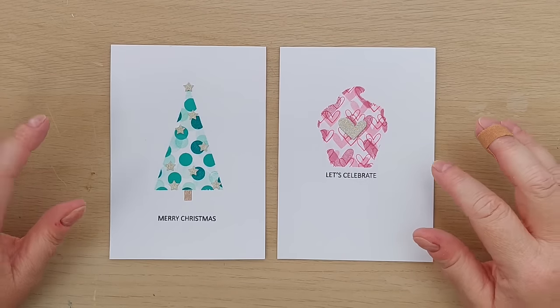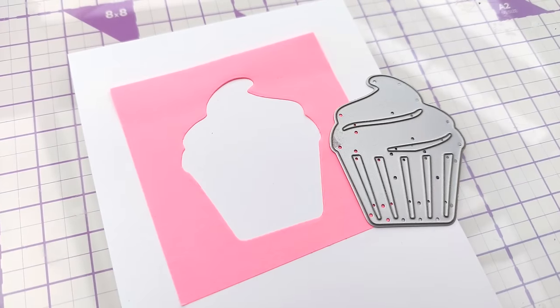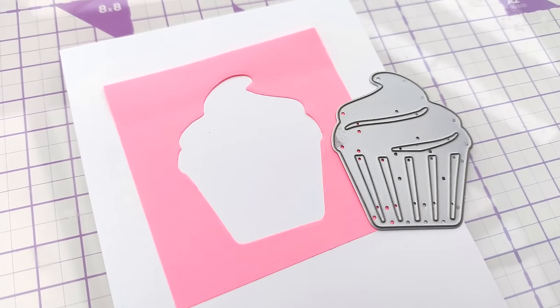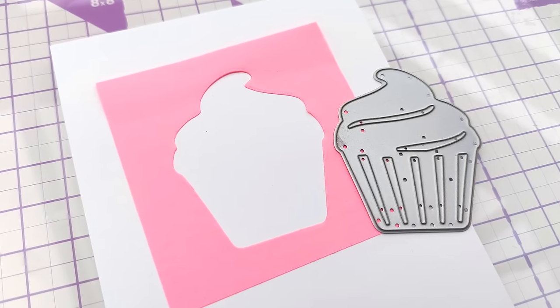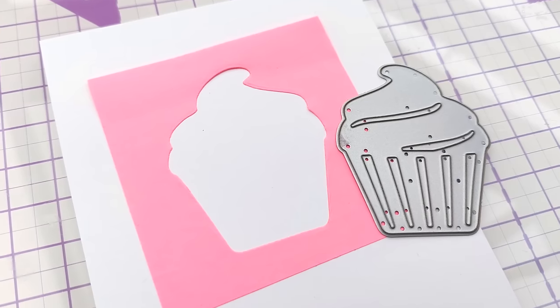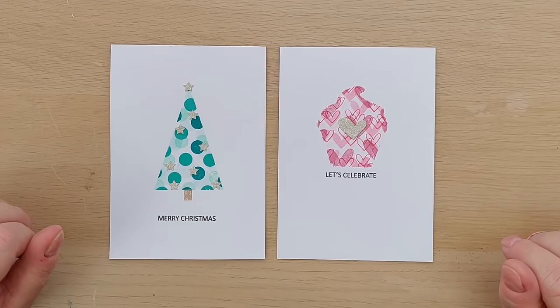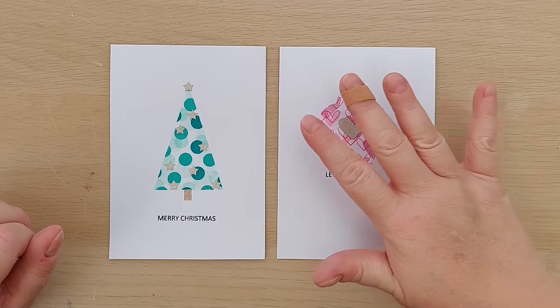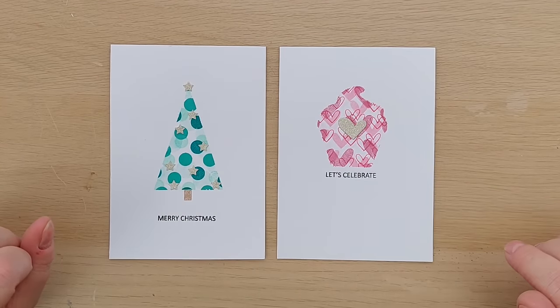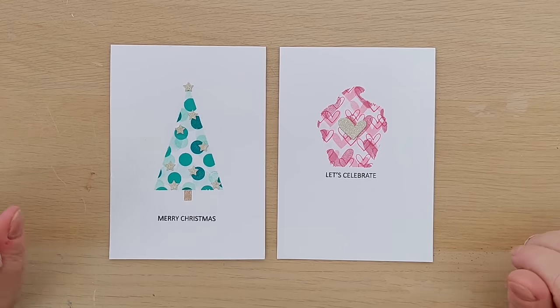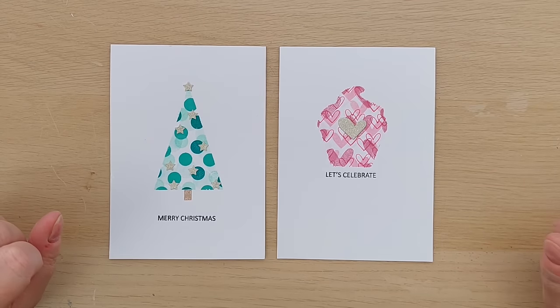For this next card I used a cupcake die to cut a cupcake die cut from post-it note and then I stuck that on the card and then used different size heart stamps and different pinks to stamp on and fill up the shape. I also added a gold heart on top just to bring in that bling and added a let's celebrate, so that could work for any kind of celebration really.